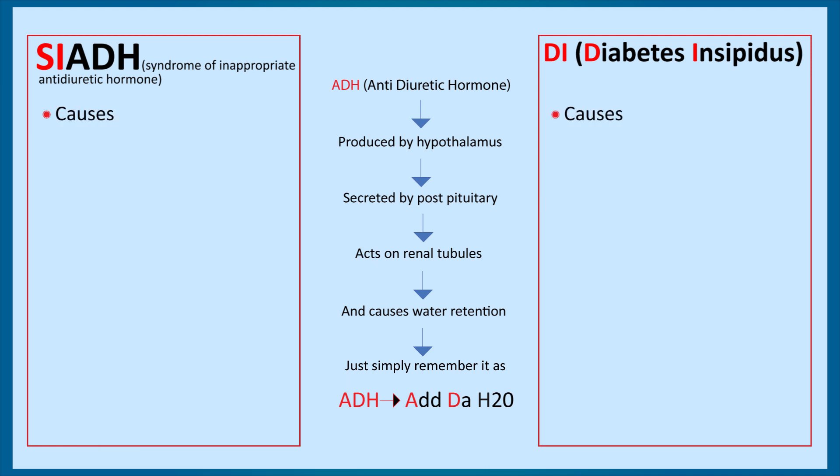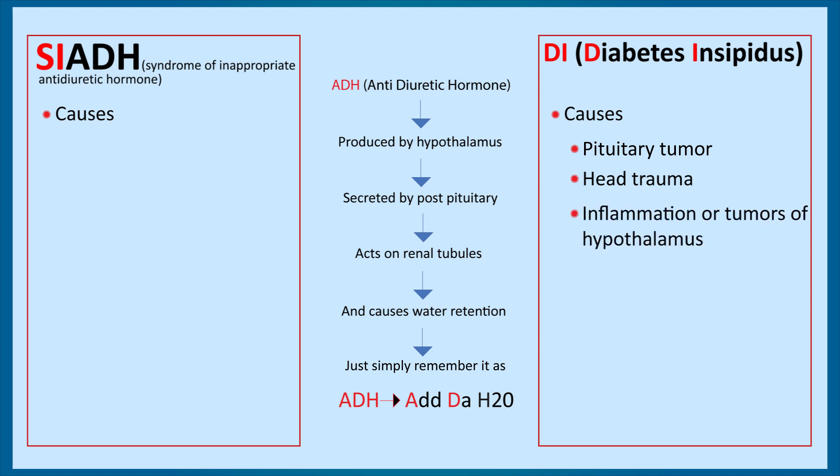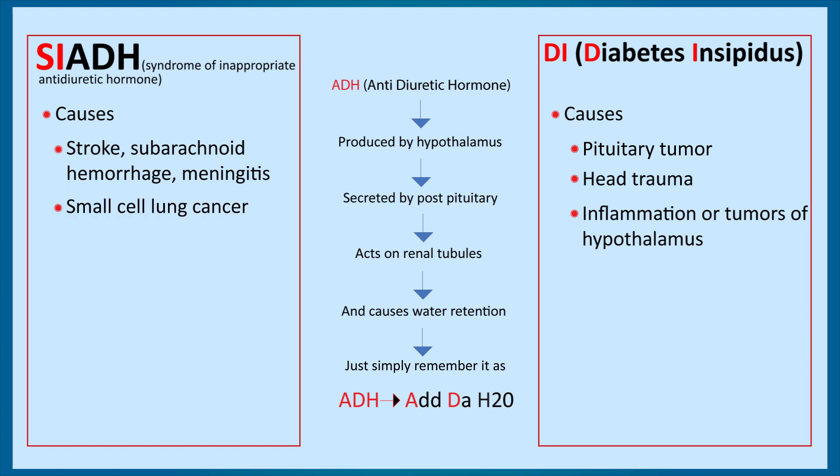Now let's discuss the causes of SIADH and diabetes insipidus. In diabetes insipidus there is decreased ADH. Since ADH is secreted by the hypothalamus and posterior pituitary, something must be wrong there — it could be a pituitary tumor, head trauma, inflammation, or tumors of the hypothalamus. While in SIADH there is increased ADH — it could be due to stroke, subarachnoid hemorrhage, meningitis, infections, and lung carcinoma, especially small cell lung carcinoma, causing increased ADH levels.